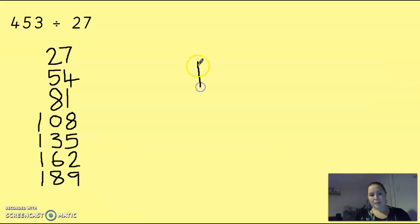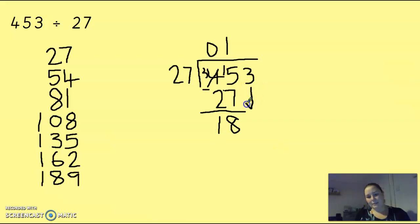Set it out. 27 there. 453. Right. Zero there to hold that place. 27 into 45. What's my closest number? Now, it is 27, even though that's quite far away. And 27 is one lot. Now, I take that away. Bit of exchanging to do. Can you take away 7? 8. 18. Then drag my next digit.